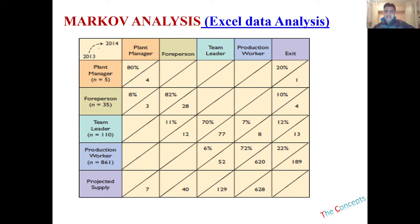What is happening here is: let's say you are in 2022 and you are planning for 2023, or any year or number of years. A few things that you need to understand first — these are your job grades or job ranks. In this example, we have a plant manager at the top position, then the foreman, then the team leader, and then the production worker.